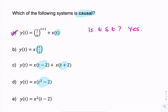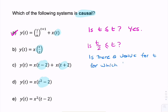For b, same question: is t over 2 always less than or equal to t? It looks as if it is, but if there's any doubt, you try to solve the opposite problem. You ask: is there a value for t for which this isn't true? So t over 2 would be greater than t. Because if this were to happen, it would mean that we were anticipating the future — we were looking into the future.